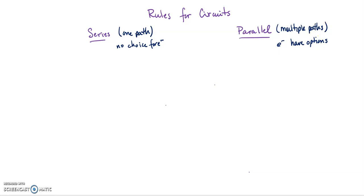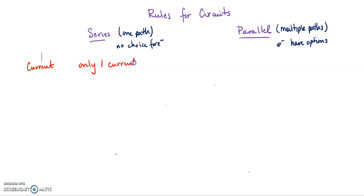The first idea we're going to talk about is current. For current, since in a series circuit there's only one path and there's no choice for the electrons, in a series circuit there is only one current. So the current from the source, or the battery, is equal to the current at resistor 1, which equals the current at resistor 2, and so on. Each resistor will have the exact same current flowing through it. It's like if there's only one checkout line — you have to go at the exact same speed as the person in front of you.